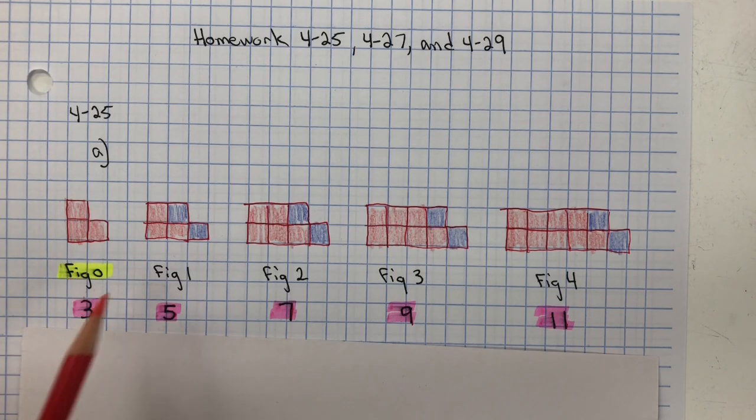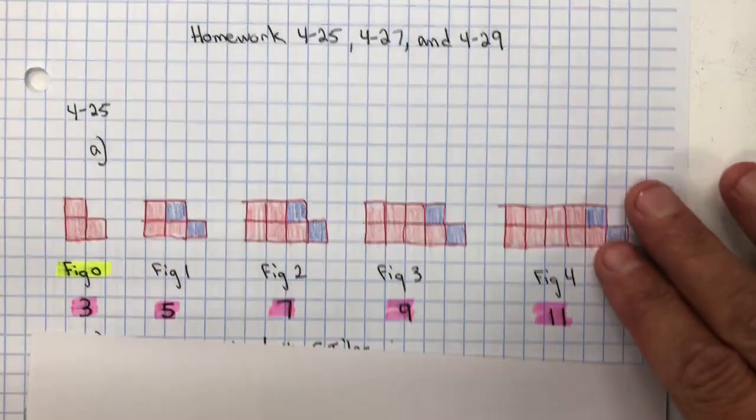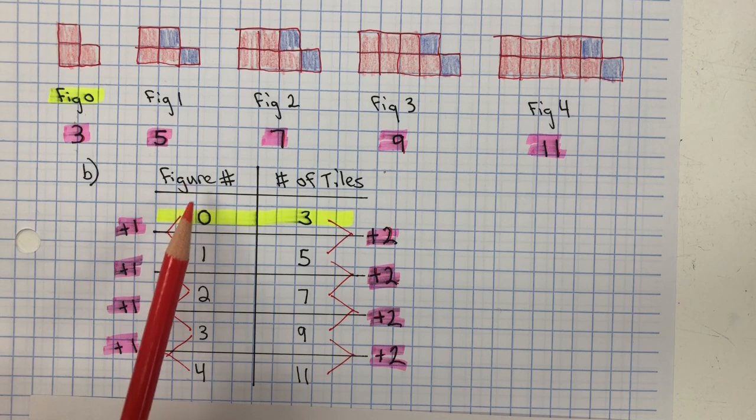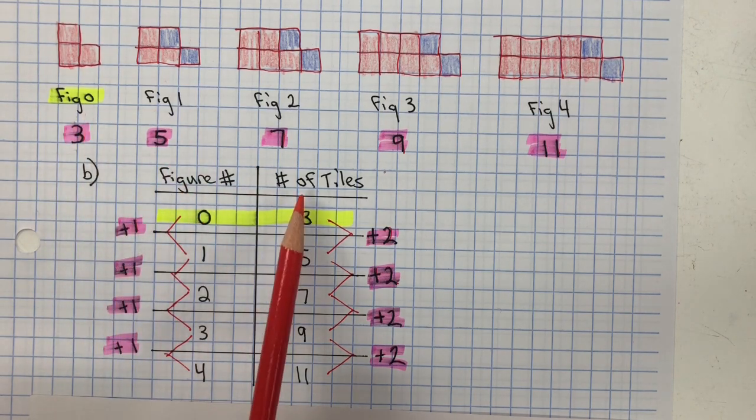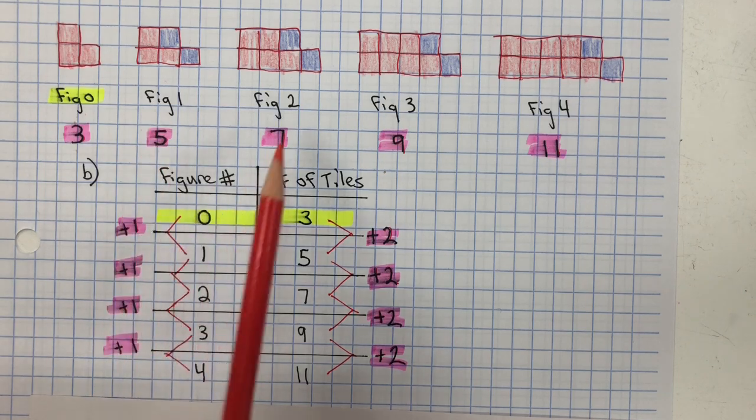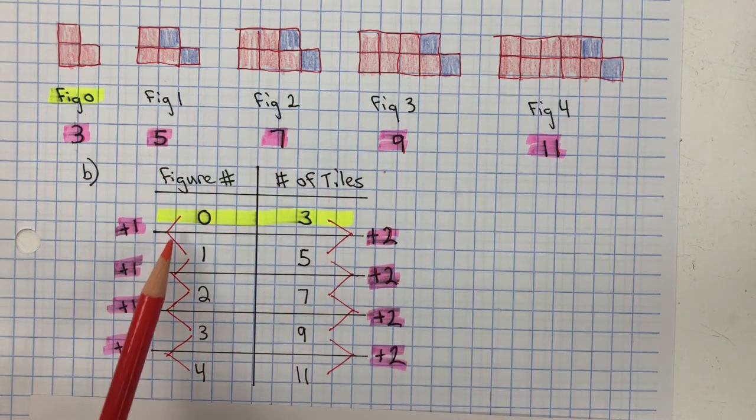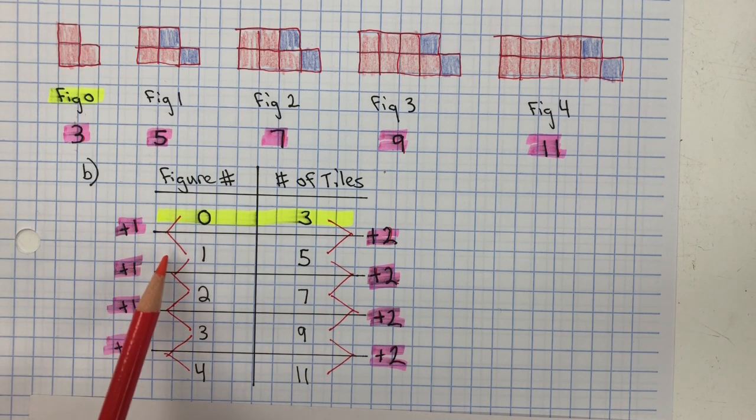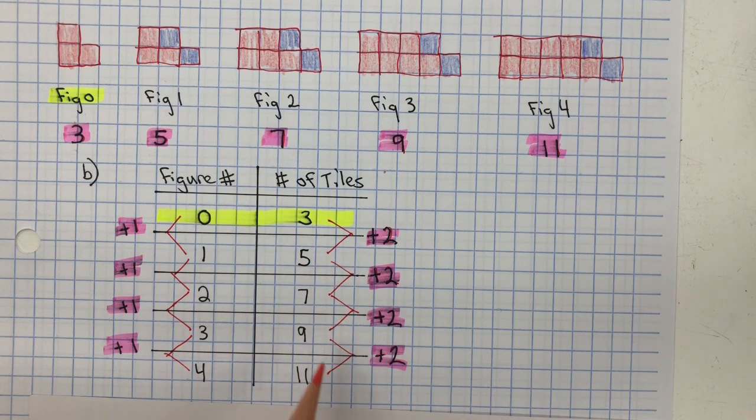So figure 0 had 3 tiles, 1 had 5, figure 2 had 7, and you can see that for every one figure number, it was increasing by 2 tiles. In part B, I needed to represent this in a table. And I have the figure number 0, and how many tiles? The number of tiles, 3. And I did that for each of the figure numbers. And you can see that it's increasing by 2 tiles for every one figure number, and that's at a constant rate.